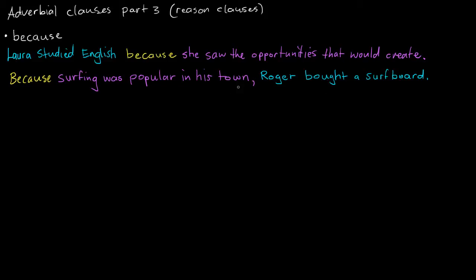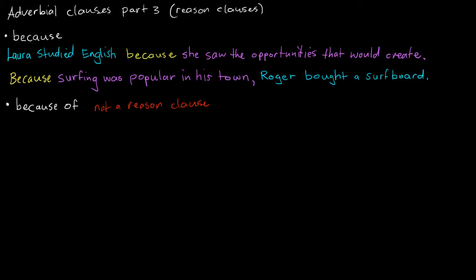Let's look at a slightly different structure now. This is not a reason clause, so I'll just make a note of that. It's not a reason clause. This actually requires a noun structure, as we're about to see. Because of the popularity of surfing in his town, Roger bought a surfboard. So this is the subordinate part and this is the main part again.